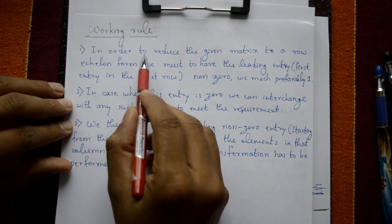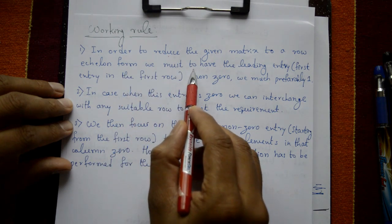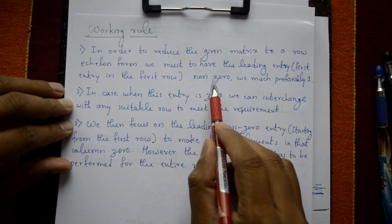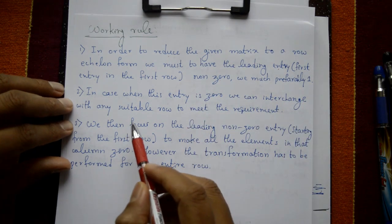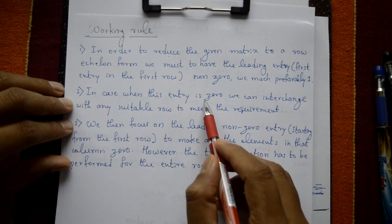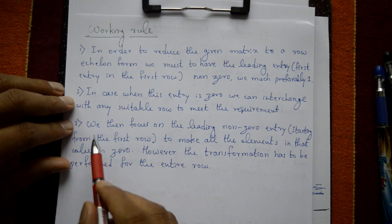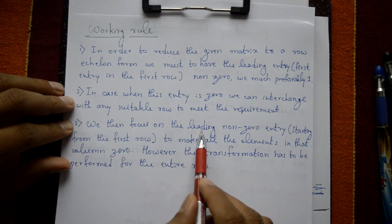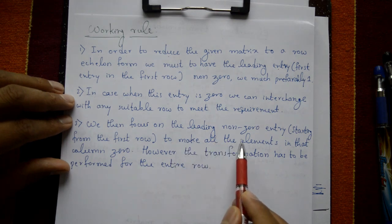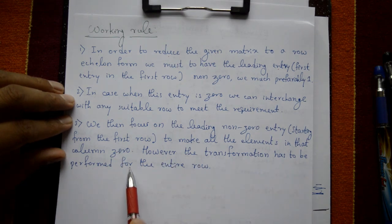Working rule for reducing a matrix to row echelon form: First, the leading entry — the first entry in the first row — must be non-zero, preferably one. Second, if this entry is zero, interchange with any suitable row to meet the requirement. Third, focus on the leading non-zero entry starting from the first row to make all elements in that column zero; however, the transformation must be performed for the entire row.